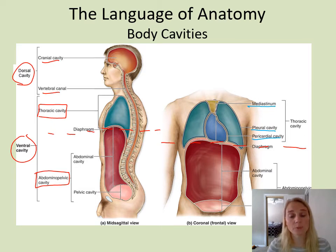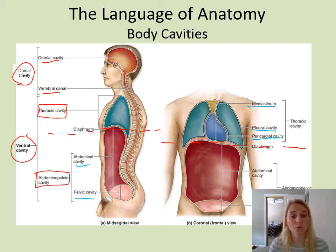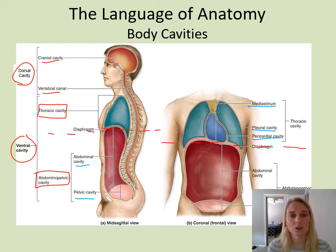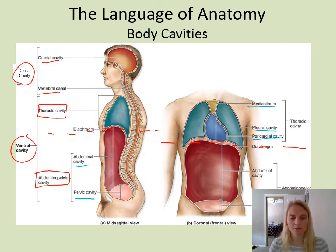Our abdominal pelvic cavity is below the diaphragm and is divided into the abdominal cavity and the pelvic cavity. The abdominal cavity houses most of your digestive organs. The pelvic cavity contains your urinary and reproductive organs — like the urinary bladder; if you're female, the uterus and ovaries; if you're male, the prostate gland and vas deferens.